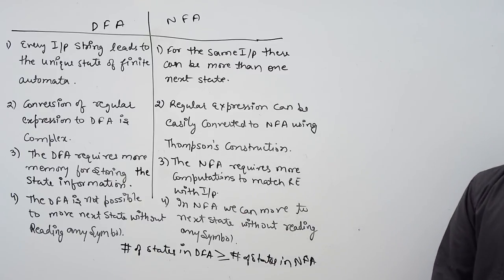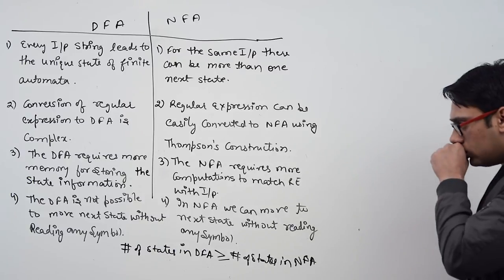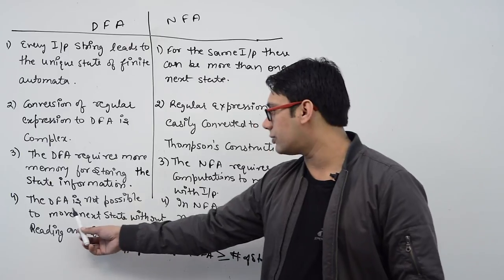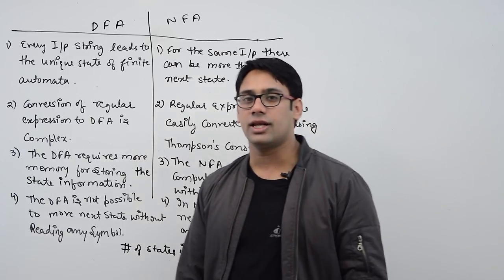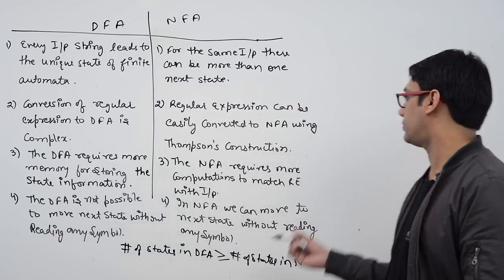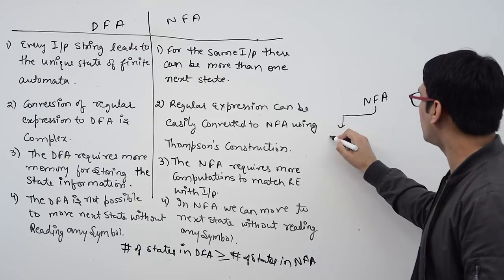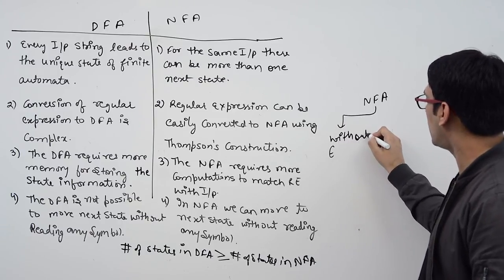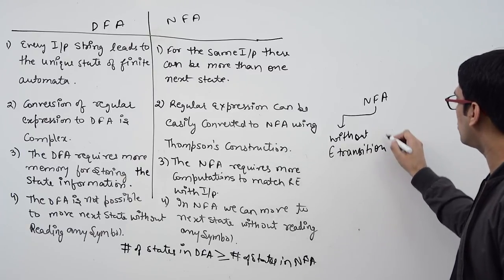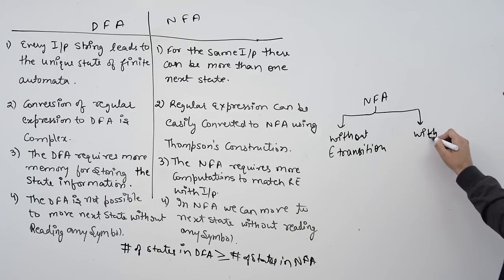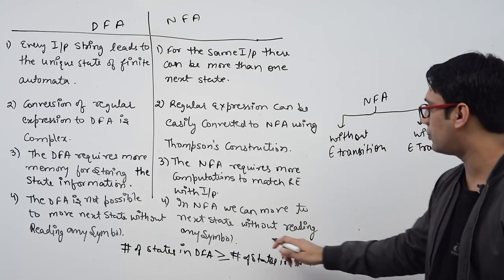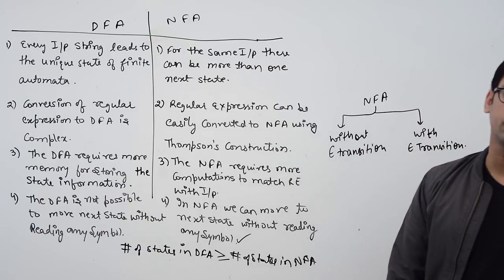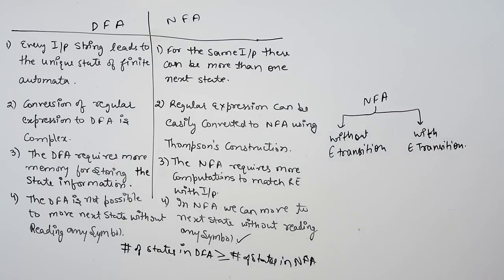A DFA is not possible to move to the next state without reading any symbol. In case of NFA, we have two types: NFA without epsilon transition, and NFA with epsilon transition. In case of NFA with epsilon transition, it is possible to move to the next state without even seeing any symbol, but in case of DFA this is not possible.